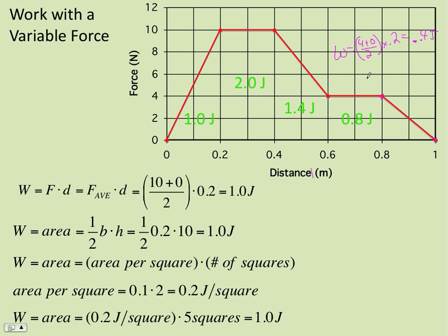We could also use the area of a triangle. Area is one-half the base times the height. Base is 0.2, height is 4. And so one-half the base times height, 0.4 joules. And if you want to count squares, there's 4 cut in 2. And so it's 0.2 joules per square times 2 squares, 0.4.